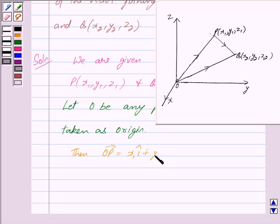And vector OQ is equal to x2i cap plus y2j cap plus z2k cap.